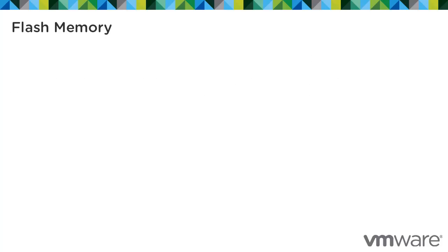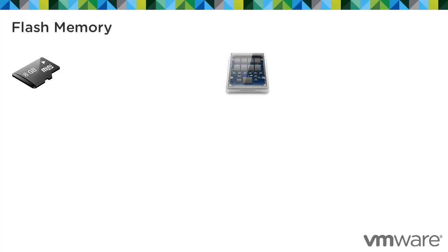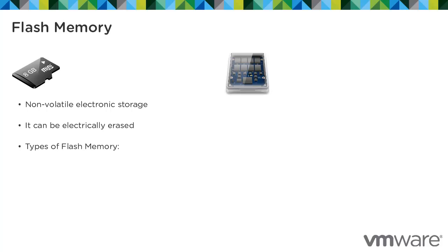Virtual Flash Caching is achieved using flash memory in the form of solid-state disks. Flash memory is a non-volatile electronic storage that can be electrically erased. There are two main types of flash memory: NAND and NOR, with NAND being the most commonly used type.